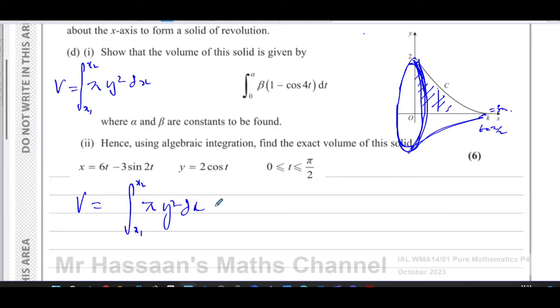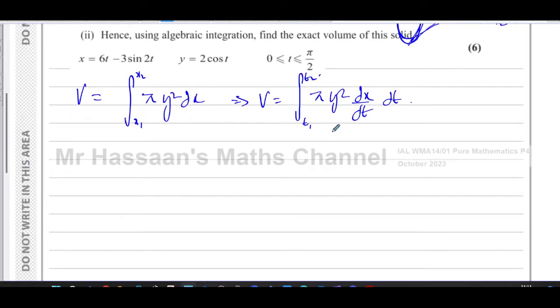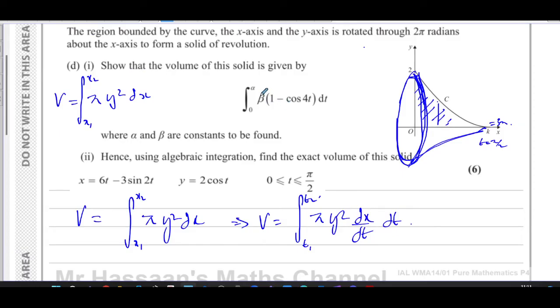So our objective is to find the volume of the shape between x1 and x2 by doing pi times y-squared dx. Because we are introducing a new variable t, a third parameter, we're going to do something very similar to what we do when we do substitution. What we're going to do is this, we're going to do pi times, and we're going to have y-squared dx dt dt. That will give us the same as this, but our limits have to be in terms of t now. The limits have to be in terms of t.